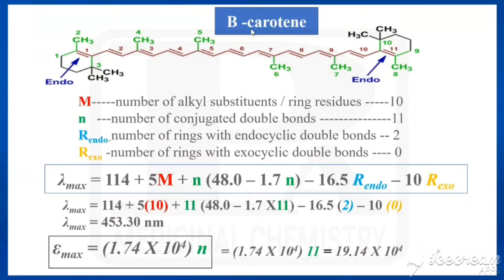Now we will see the first example: beta-carotene. From the structure of beta-carotene, we have to calculate four values: M, n, R_endo, and R_exo. M is the number of alkyl substituents and ring residues. First we identify the basic conjugated polyene portion of the structure.